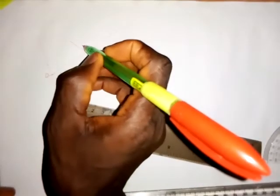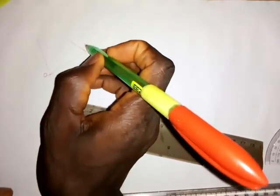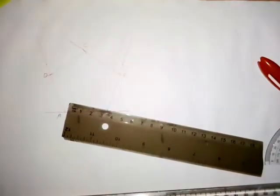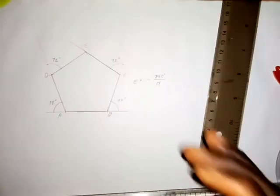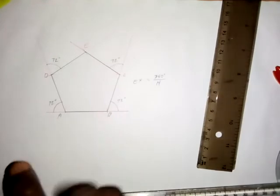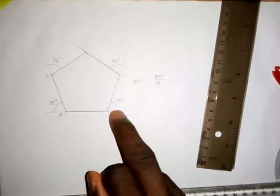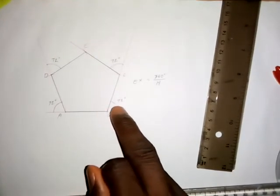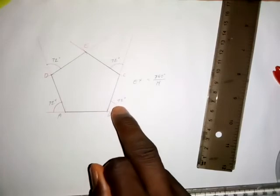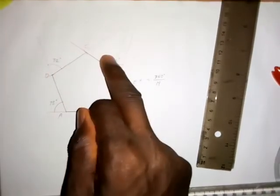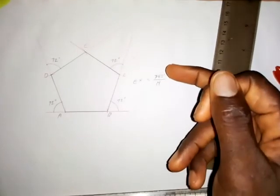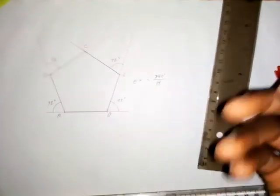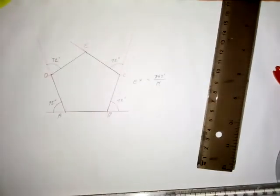This intersection is point E. The next thing is to bring out the polygon with a continuous line — and this is the pentagon. As I said, the angles here are exterior angles, each measuring 72 degrees, and to calculate the exterior angle you divide 360 by the number of sides. That is how we get each exterior angle.